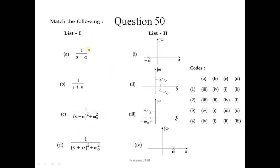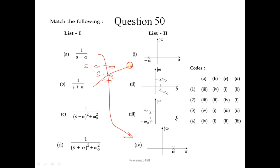Question number 50: in list 1 the expressions are given and in list 2 the corresponding polar plots are given. For 1/(S − A), the pole is at S = +A, so it matches the corresponding polar plot. For 1/(S + A), the pole is at S = −A. Matching all four expressions to their polar plots gives the correct sequence 4, 1, 2, 3; the fourth option is the correct answer.